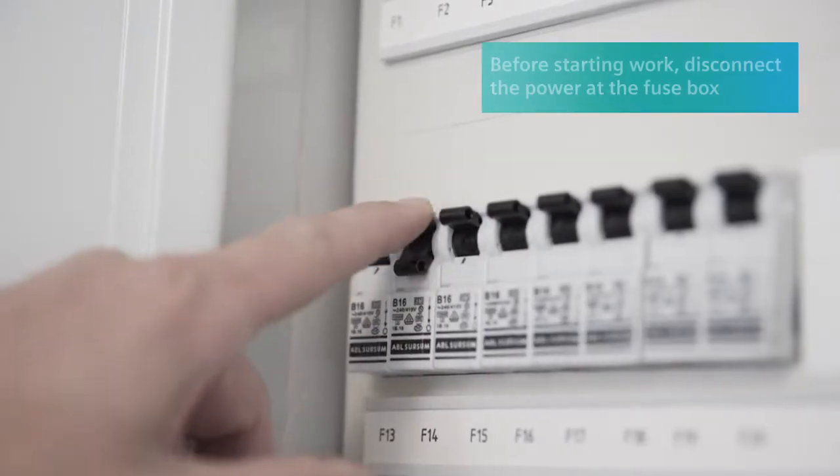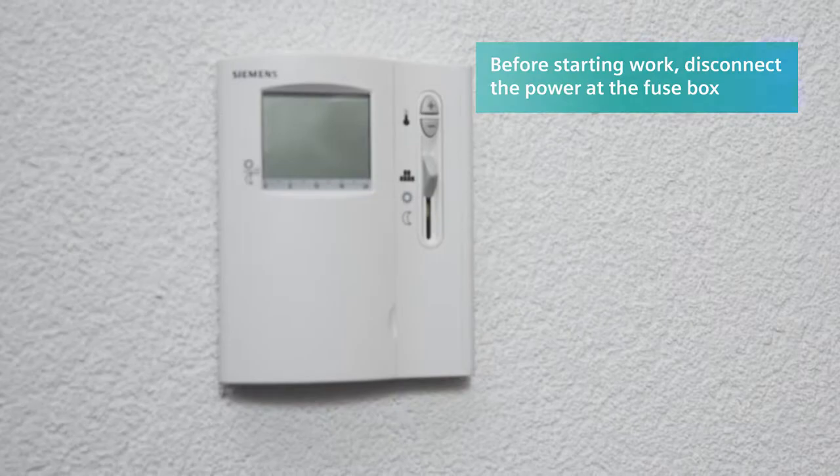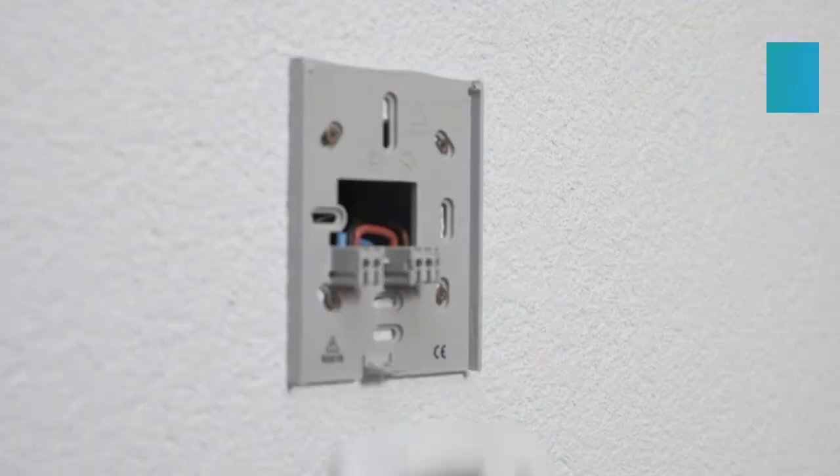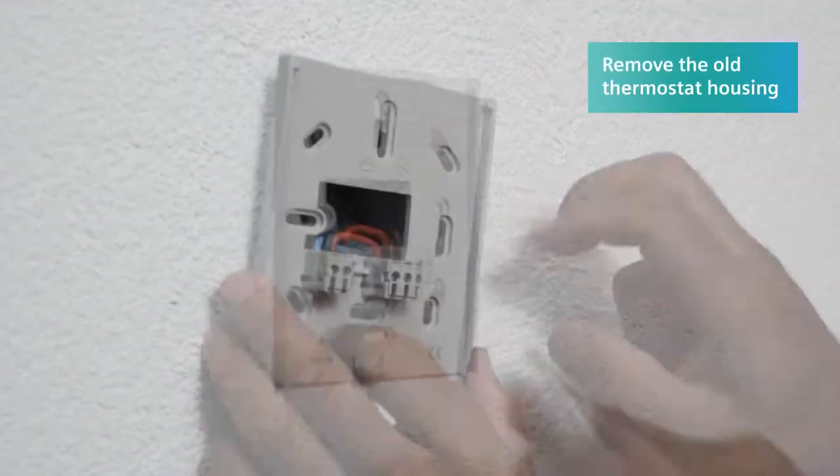Then cut the power to the thermostat by disconnecting the fuse. Now remove the housing of the old thermostat to expose the wiring.